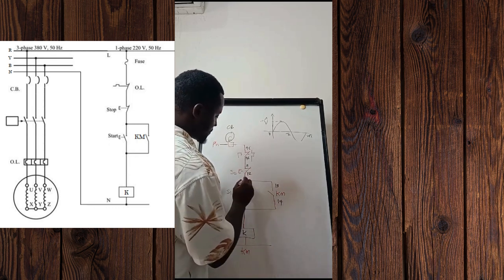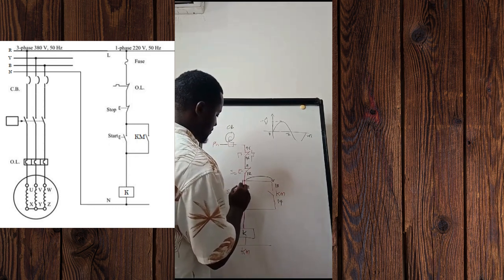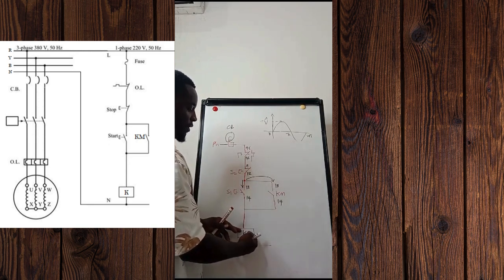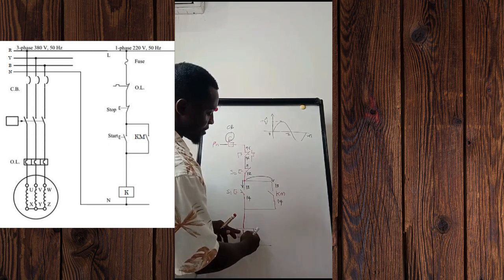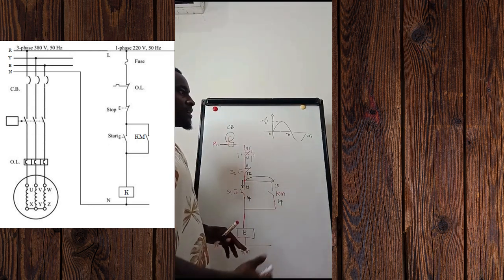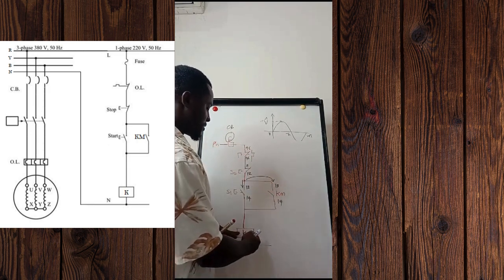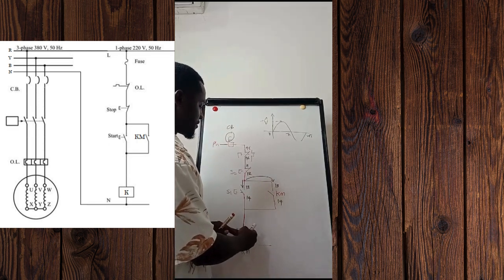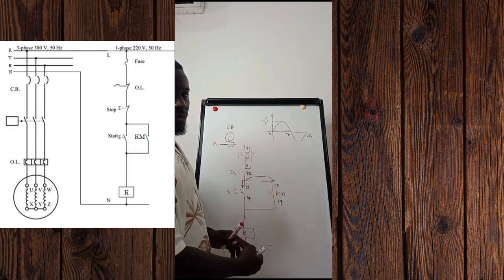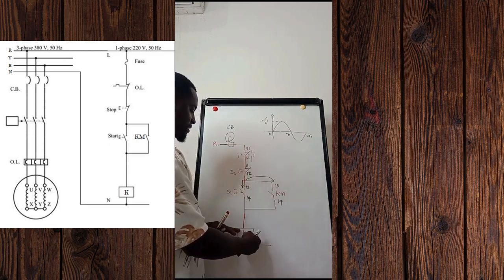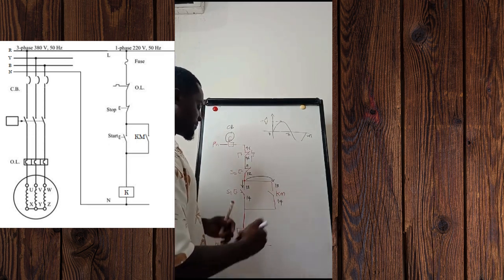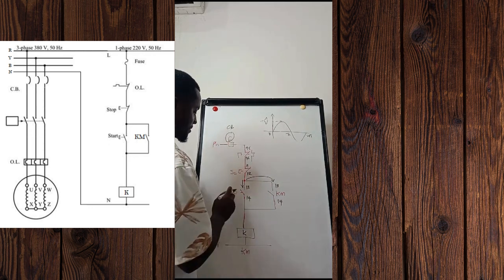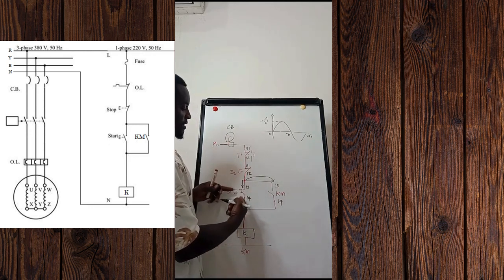At the same time, current will also move and get to the auxiliary contact level. For us to enable current to flow to the coil so that it will be energized with sufficient current and the correct voltage — you must make sure you fit the coil of the contactor with the desired voltage rating, as too much voltage could damage the coil and too little voltage means the coil may not function. Once you press the push button, it closes and current moves directly to the coil.